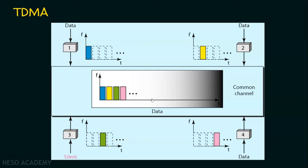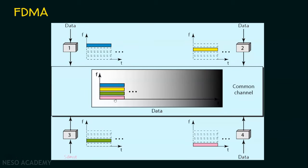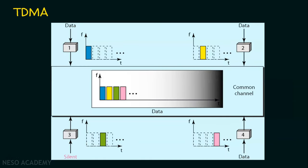Let's compare TDMA with FDMA. In FDMA, at the same time, all stations' data are transmitted simultaneously. Whereas in TDMA, at a particular time, only one station will be using the entire bandwidth of the channel.